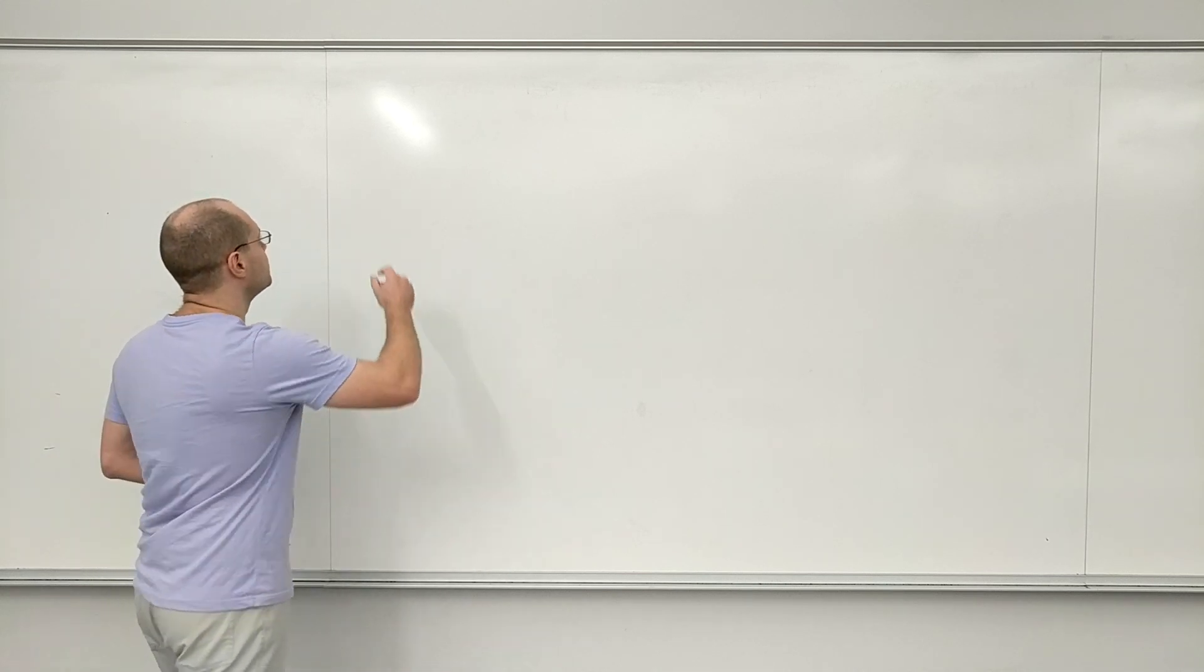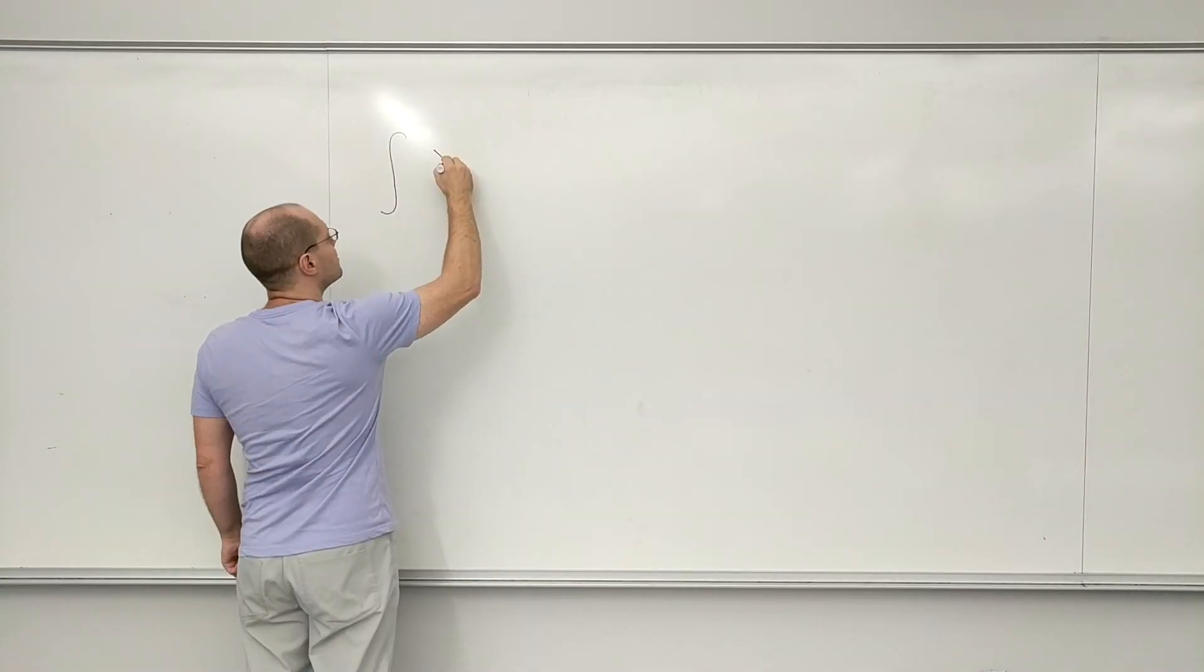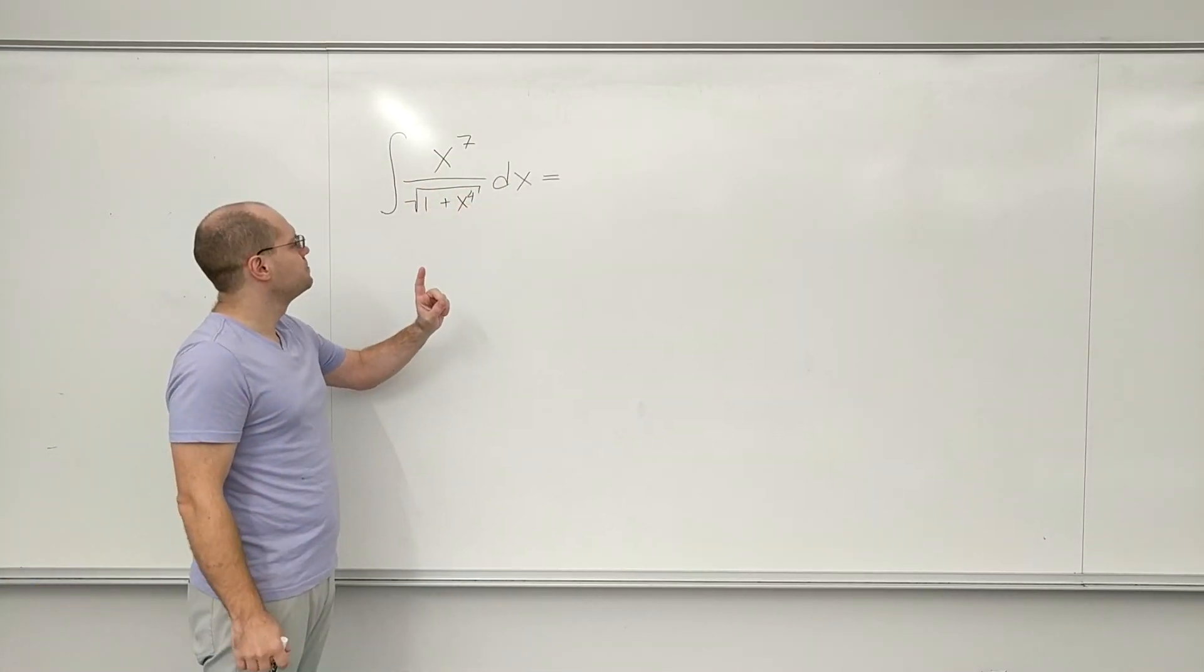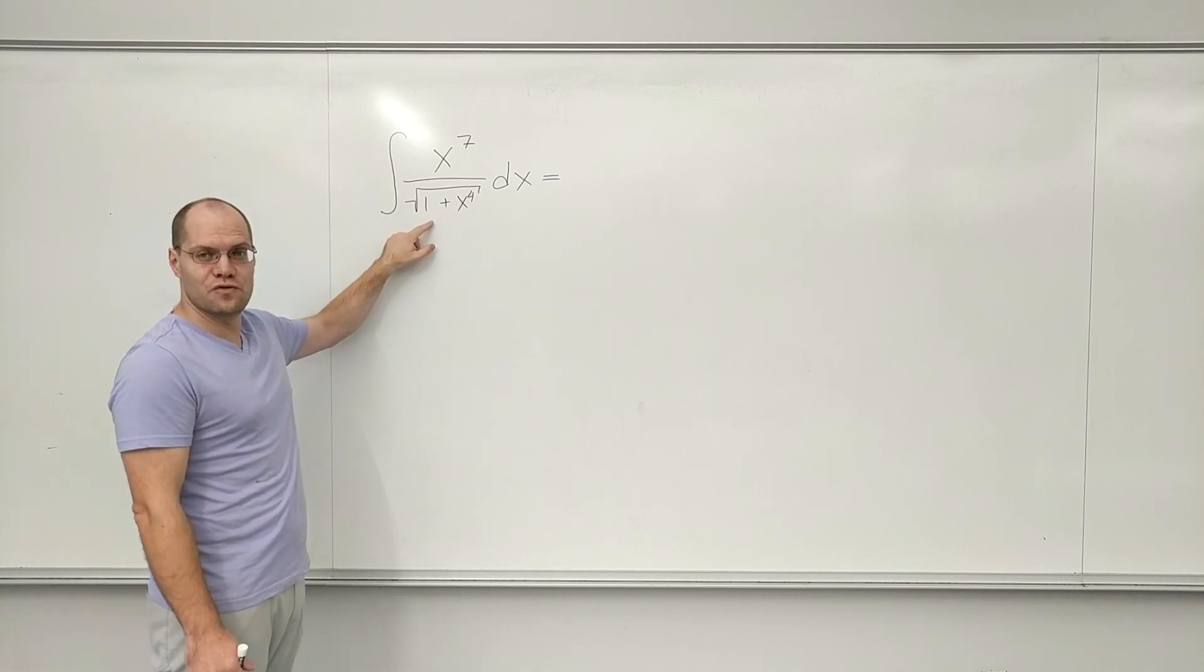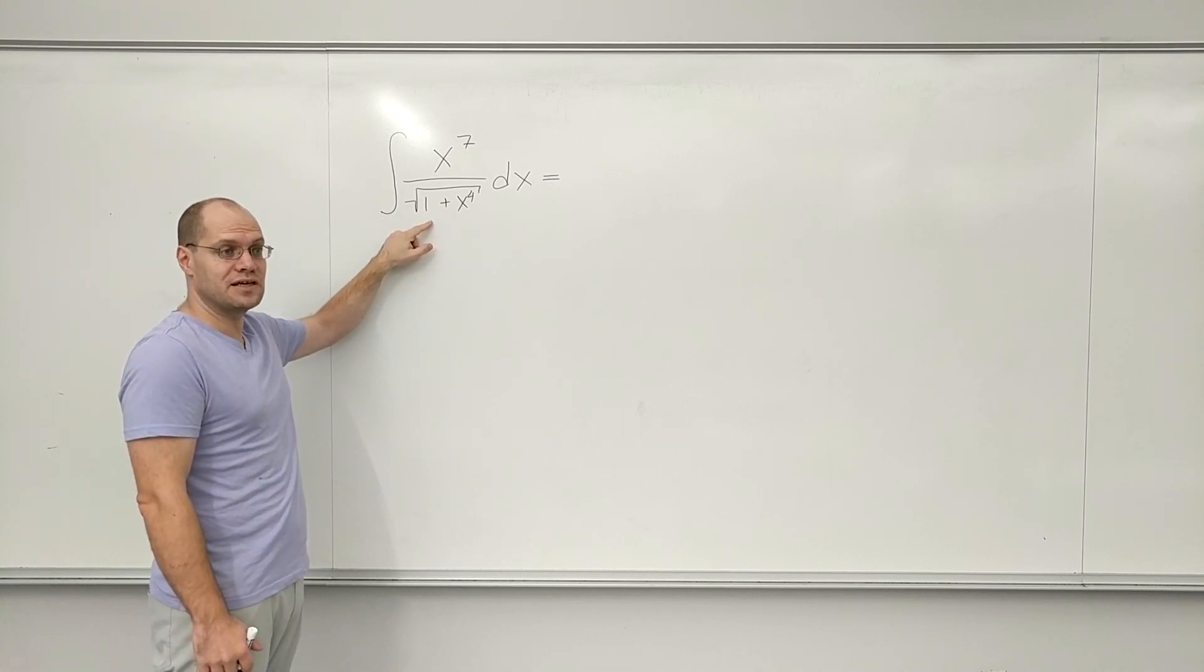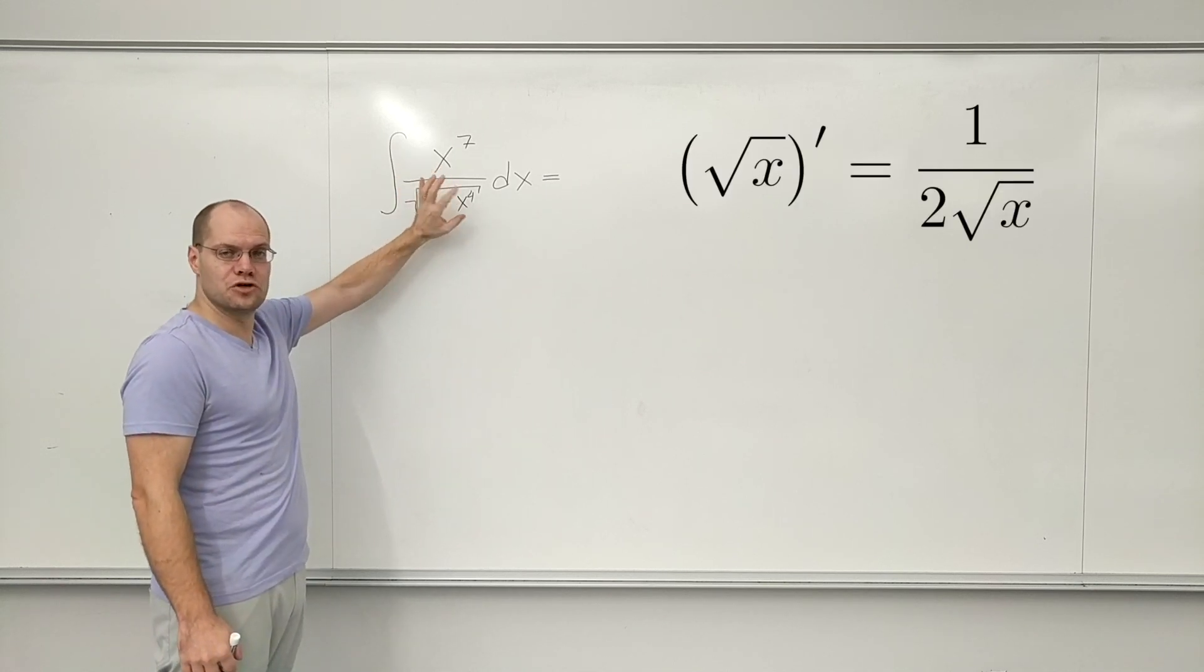So, here's the first one. Okay, so I look at this, and the first thing I notice is 1 over the square root. And I'm thinking, this is the derivative of the square root of something.